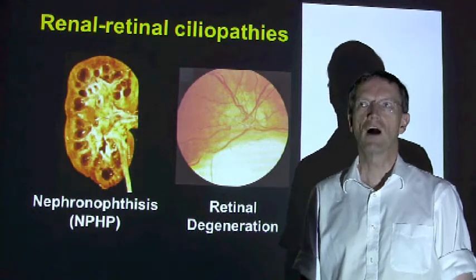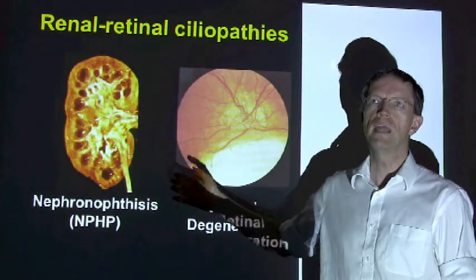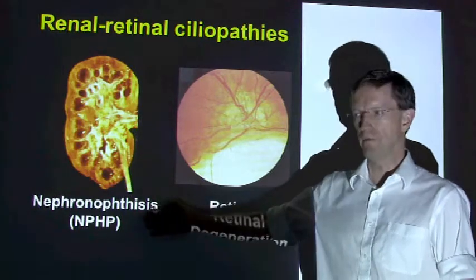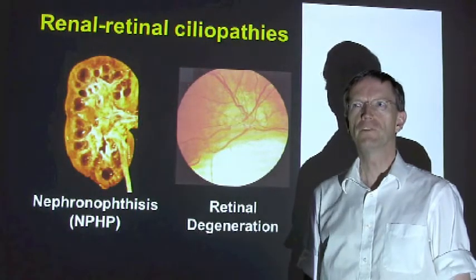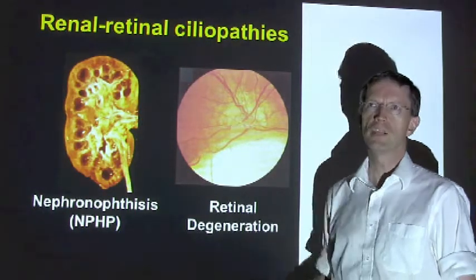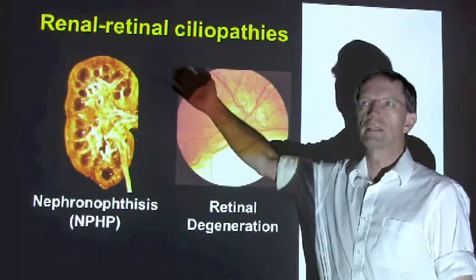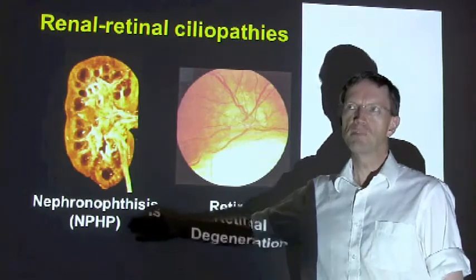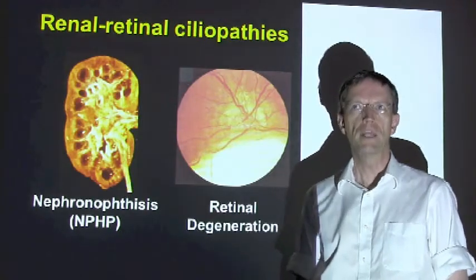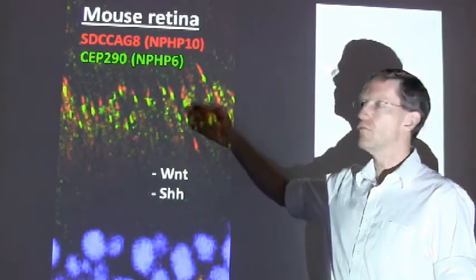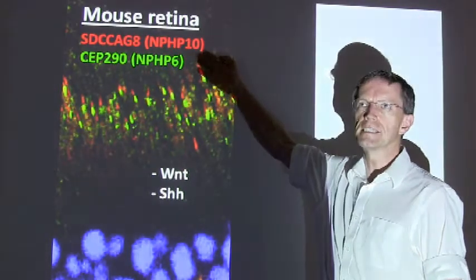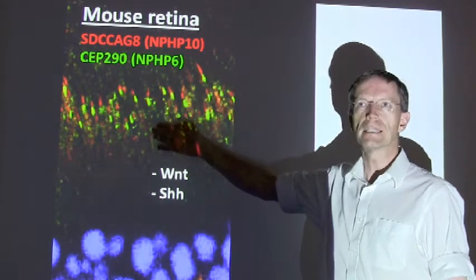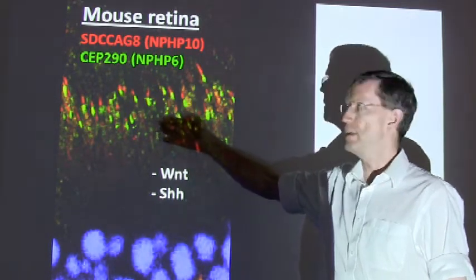We are studying the mechanisms of single gene causes of kidney failure and blindness in humans, where the most prominent kidney phenotype is called nephronophthisis or NPHP, and the eye phenotype is retinal degeneration. These diseases have been termed renal-retinal ciliopathies because the products of the mutated genes, or NPHP proteins, are all located in primary cilia, as shown here for the ciliopathy proteins CCDC-AG8 or NPHP10 and CEP290 or NPHP6, in connecting cilia of photoreceptors in mouse retina.